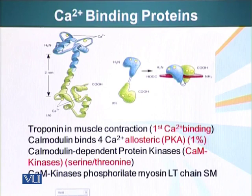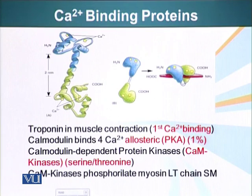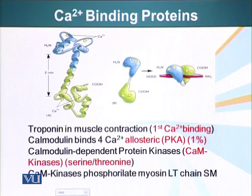This is a very important protein. About 1% of the protein mass of a cell is calmodulin. It binds these calcium ions in cooperative binding, just like we saw in pKa. First, one calcium ion binds, it causes a conformational change, the other calcium ion binding site is exposed, and the next calcium ion binds. Ultimately, when calmodulin has bound 4 calcium ions, it can do several things.